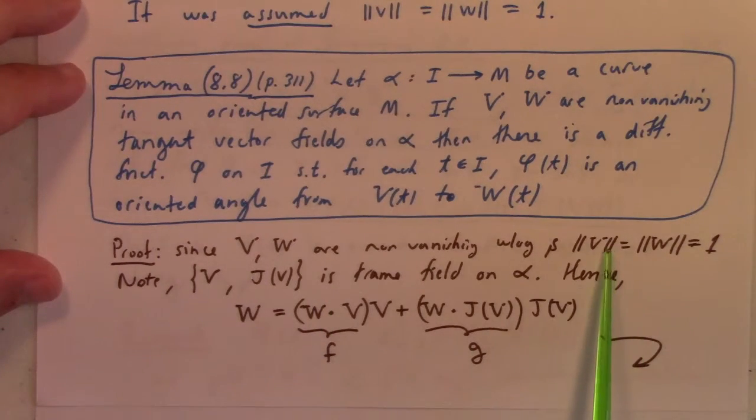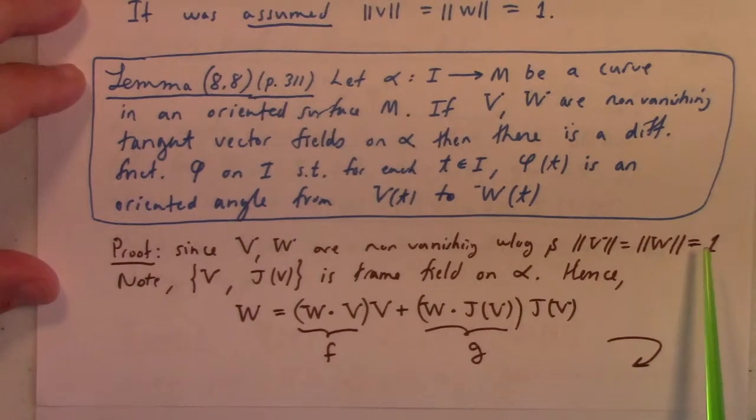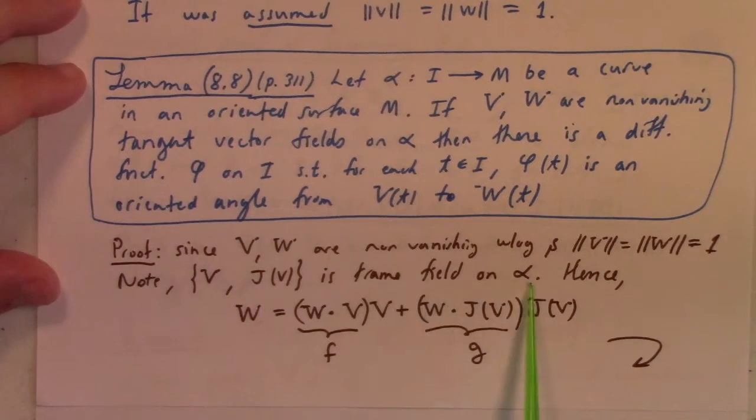And the proof is just using this j construction again. So non-vanishing tangent vector fields. Why am I assuming the length of them is 1? Oh, I said without loss generality, suppose that the length was 1. Fine. So v comma j of v is a frame field on alpha. And then you get the w is equal to that, where this is the f and that is the g. I suppose I buy this. J of v is definitely perpendicular to v. So j and v and v, v and j of v give you an orthonormal basis. Because we assume v is the length.